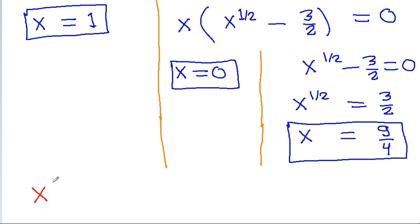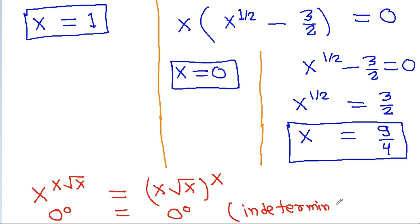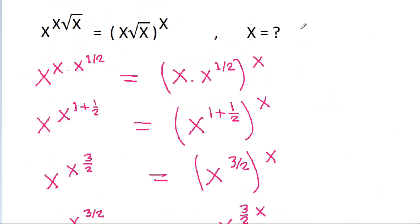Now checking: if we put x equal to 0 in x power x root x equal to x root x power x, we get 0 power 0 on both sides, which is indeterminate form. So x equal to 0 is not possible. Therefore, x is equal to 1 and x is equal to 9 by 4.